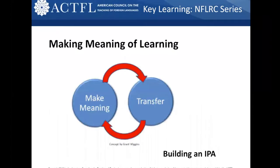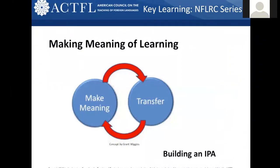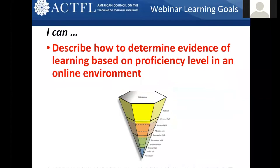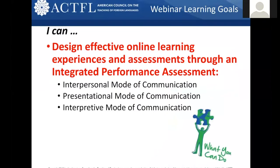I stopped here to make meaning of your learning, so I'm happy I was able to recap in case you were looking for notes from your three-two-one activity. Now we're going to make meaning of the learning from your previous webinars and apply it to building an IPA that will help students grow in all three modes. Today we're looking at how to use the World Readiness Standards for online language learning to plan effective curriculum, assessment, and instruction; how to determine evidence of learning based on proficiency level; and how to design effective online learning experiences through an integrated performance assessment.